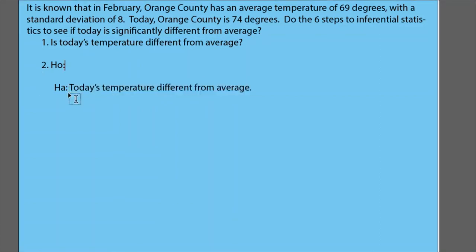Remember what we do for the null to make that the opposite. If you're not sure what I'm doing right here you may want to go back to the lectures or the video on how to make a null and alternative hypothesis. But if you do recall, we add the word 'not' so we say 'today's temperature is not different from average'. So far we've completed two of the six steps.